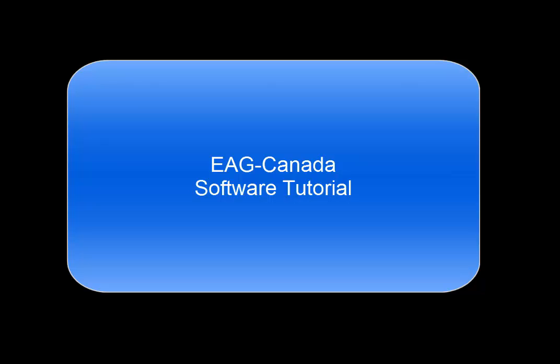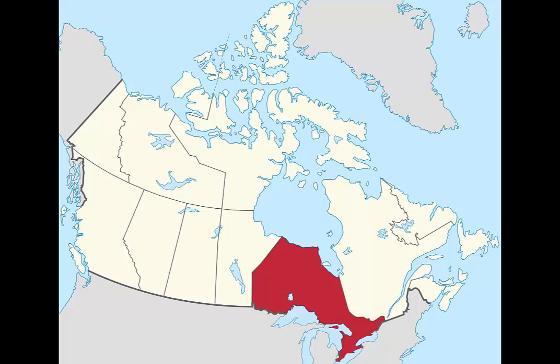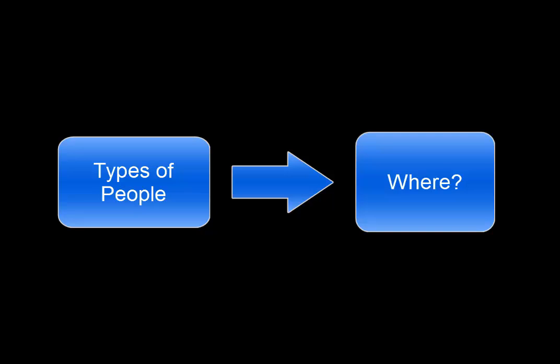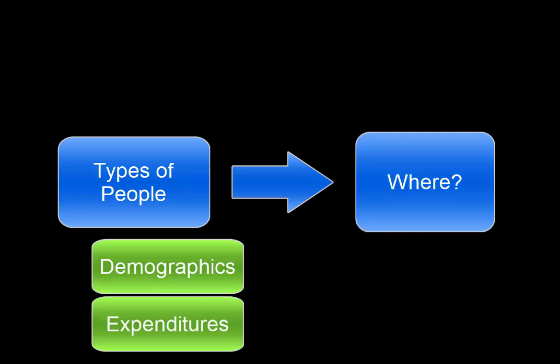EAG Canada is available to Conestoga via a market research company that offers us the use of software called Allocate. The software is a very powerful tool that helps you analyze geographic areas — for example, a province, a city, or even areas of a city such as postal codes — to understand what types of people live where, including their demographics and expenditures.